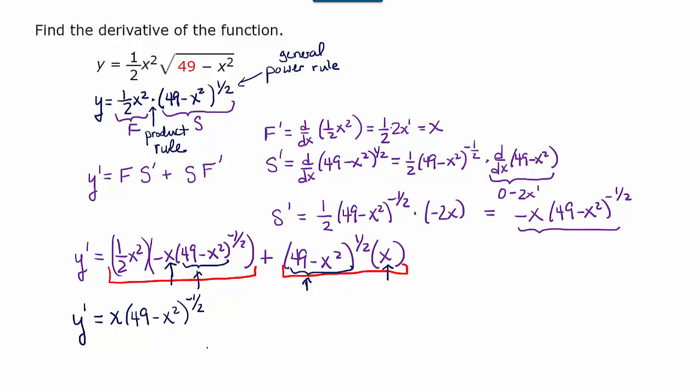Now let's talk about what's left behind. In the first big term, we still have a one half x squared left here. We took out the x but not the negative, so let's write a negative. And we took out the 49 minus x squared to the negative one half.